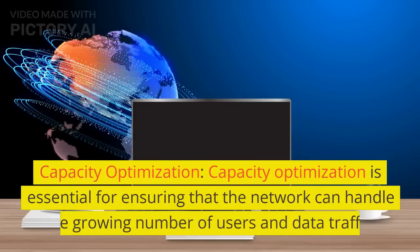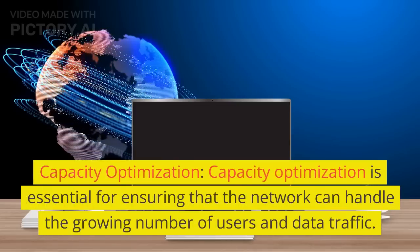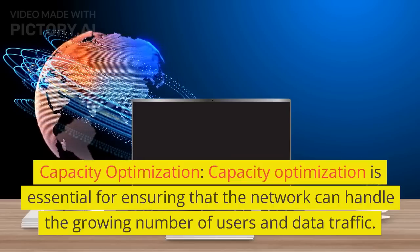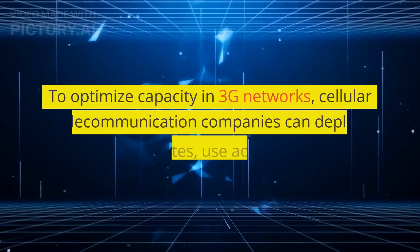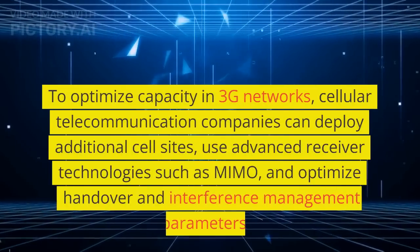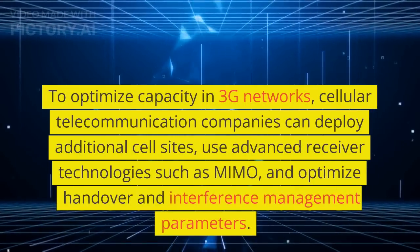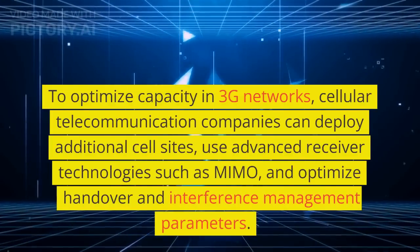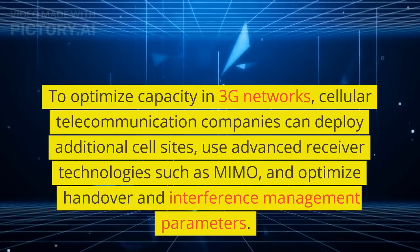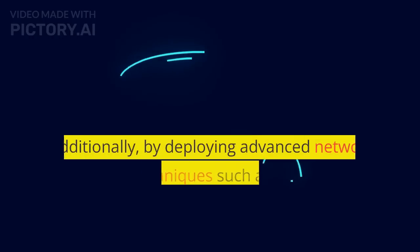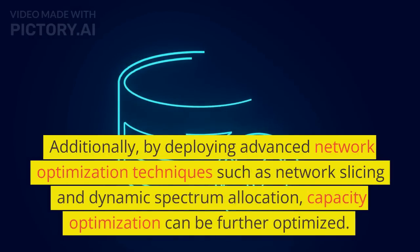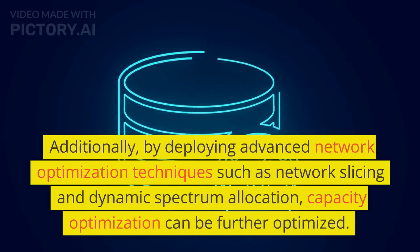Capacity Optimization: Capacity Optimization is essential for ensuring that the network can handle the growing number of users and data traffic. To optimize capacity in 3G networks, cellular telecommunication companies can deploy additional cell sites, use advanced receiver technologies such as MIMO, and optimize handover and interference management parameters. Additionally, by deploying advanced network optimization techniques such as network slicing and dynamic spectrum allocation, capacity optimization can be further enhanced.